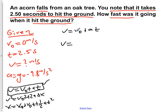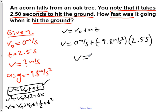So v equals v₀ is equal to 0 meters per second. Our acceleration is negative 9.8 meters per second squared, and our time is 2.5 seconds. So our final velocity is 24.5 meters per second.